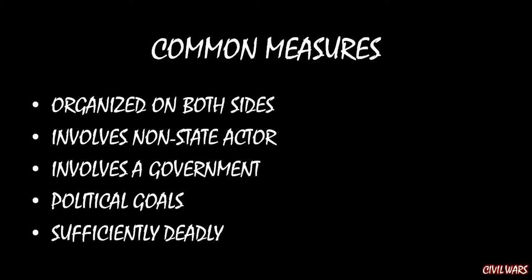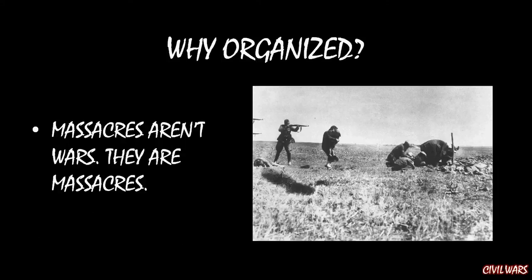I think it's intuitive why you want to have these sorts of measures in what you call a civil war or don't call a civil war. So we need to have organization. The reason is that we're not interested in massacres. Massacres are tragic, don't get me wrong. This is an example here on the right — that's the Nazi Holocaust. We don't want to include these because you don't actually see conflict or fights going on from one side to the other. You see one side completely dominating and one side getting completely destroyed. The Nazis were well organized; their victims were not. So we do not include the Nazi Holocaust or any sort of massacre like this in a data set on civil wars.